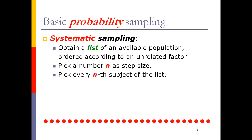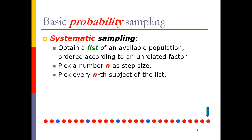Here's a visual representation. If we select every fifth member of the population, we begin by selecting one member at the start of the list, then select every fifth after that, counting five more each time, and so on until we reach the end of the list or have enough people. Because we order the list by a factor unrelated to our study, this gives everyone the same probability of being selected and generally won't exclude important subgroups. However, this is not simple random sampling, because not every combination of people has the same probability of being selected.